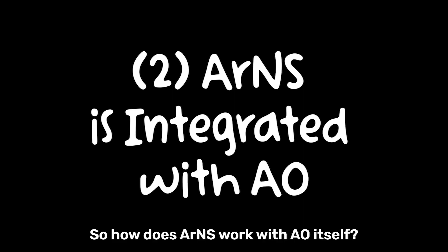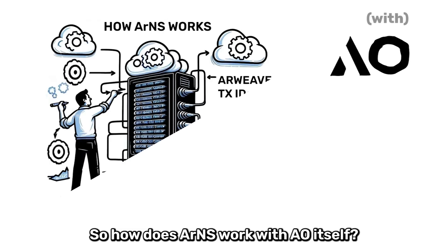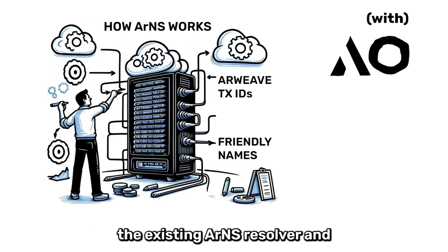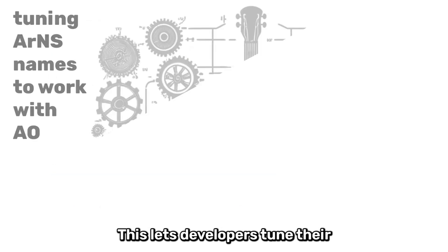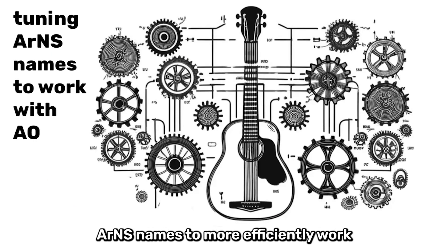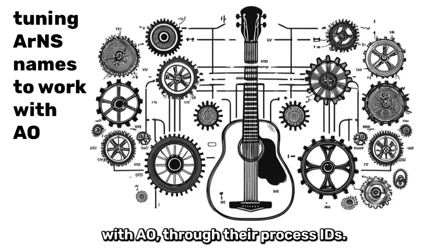Number two: RNS is integrated with AO. So how does RNS work with AO itself? We've taken the existing RNS resolver and made a special version for AO. This lets developers tune their RNS names to more efficiently work with AO through their process IDs.